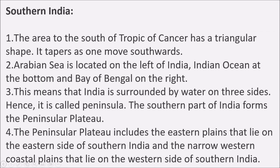Southern India — the area south of the Tropic of Cancer — has a triangular shape; it narrows as one moves southward. The Arabian Sea is located on the left of India, the Indian Ocean at the bottom, and the Bay of Bengal on the right. This means India is surrounded by water on three sides, hence it is called a peninsula. The peninsular plateau includes the eastern coastal plains on the eastern side and the narrow western coastal plains on the western side of southern India.